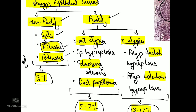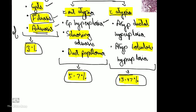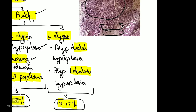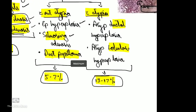Proliferative lesions can be without atypia or with atypia. Without atypia: epithelial hyperplasia is increased proliferation of both myoepithelial cells and the columnar ductal epithelium. Sclerosing adenosis involves proliferation of both the alveolar glands and the stroma, where the stroma compresses the alveoli. Duct papilloma consists of multiple fibrovascular cores arising from the duct.